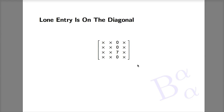Eigenvalue feature number one: if there is a column that has a single nonzero entry and that entry is on the diagonal, then that entry is an eigenvalue. For example, in this matrix the little crosses denote the values that don't matter, and seven is the only nonzero entry in column three. It's also in row three, so it is on the diagonal — therefore seven is an eigenvalue.